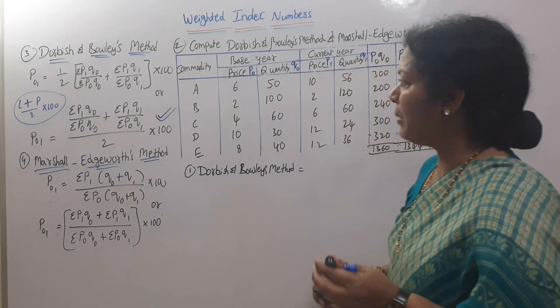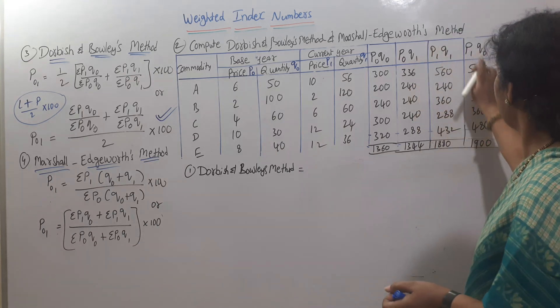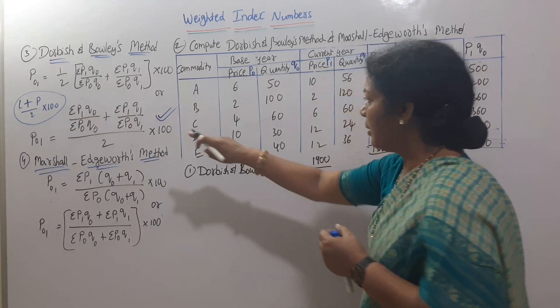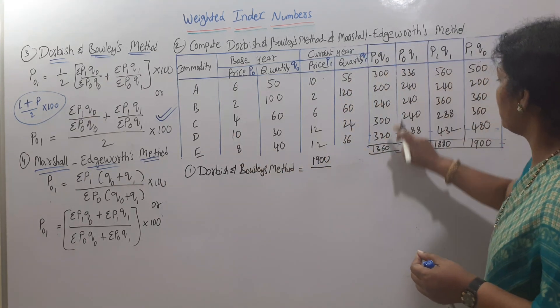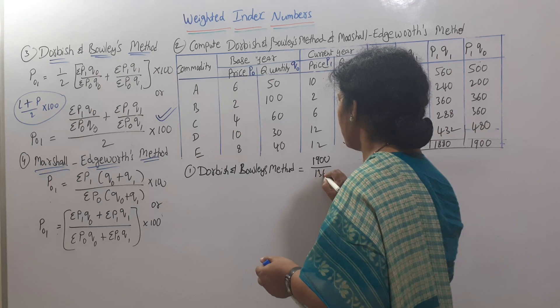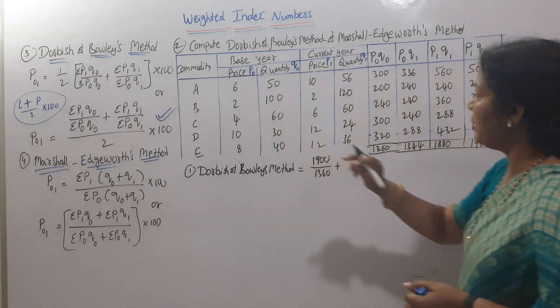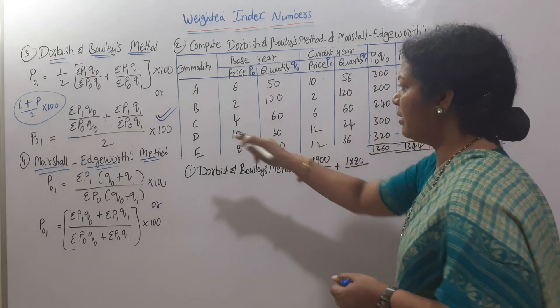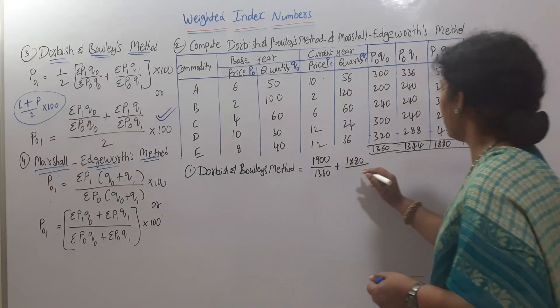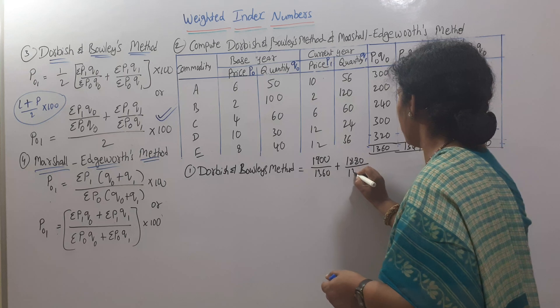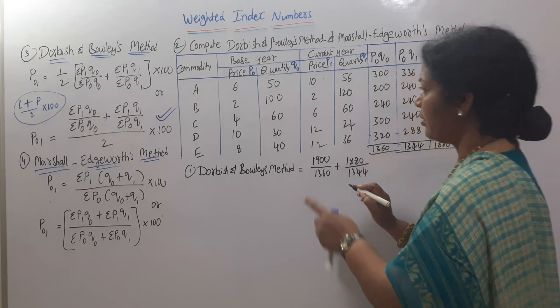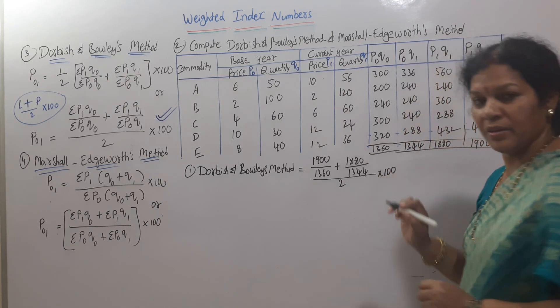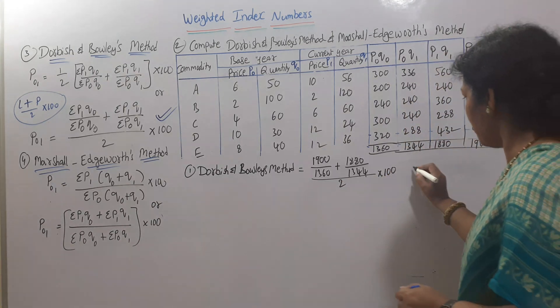Sigma P1Q0 is 1900 divided by P0Q0 which is 1360, plus P1Q1 which is 1880 divided by P0Q1 which is 1344, divided by 2 times 100. This is the formula, so let's do the calculations.